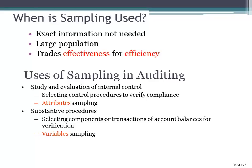By doing that, what you're trading off on is effectiveness for efficiency. Sampling is more efficient. We can't look at 100% of the items, and you have a constrained time period in which you can audit. You can't sit at your client for 365 days of the year. So you're trading off the effectiveness of looking at a lot more items for efficiency — focusing on fewer items.